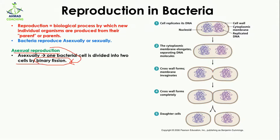Then the cross wall forms — the membrane invaginates, moving inward, and the cross wall forms completely. In this way, the membrane and cell wall are both formed, and by dividing, we have two daughter cells which each have their own DNA.